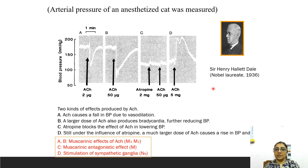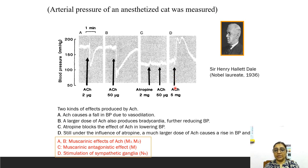Here is the graph of arterial pressure measured by Sir Henry Dale, who received the Nobel Prize for this experiment. He showed two different kinds of effects produced by acetylcholine. In 'A', a lower dose causes fall in blood pressure due to vasodilatation. In 'B', a large dose produces bradycardia and further reduction in blood pressure. In 'C', atropine blocks the blood-pressure-lowering effect of acetylcholine. In 'D', still under atropine influence, a much larger dose of acetylcholine causes rise in blood pressure and tachycardia — demonstrating stimulation of sympathetic ganglia via nicotinic receptors, causing norepinephrine release and rise in blood pressure. A and B represent muscarinic effects; C represents muscarinic antagonism by atropine; D represents nicotinic ganglionic stimulation.